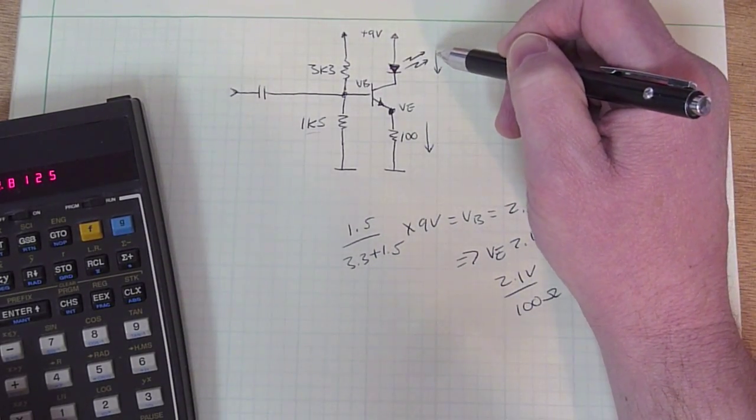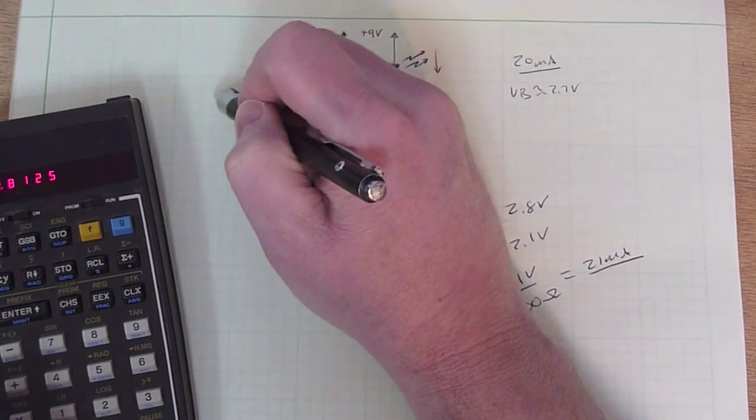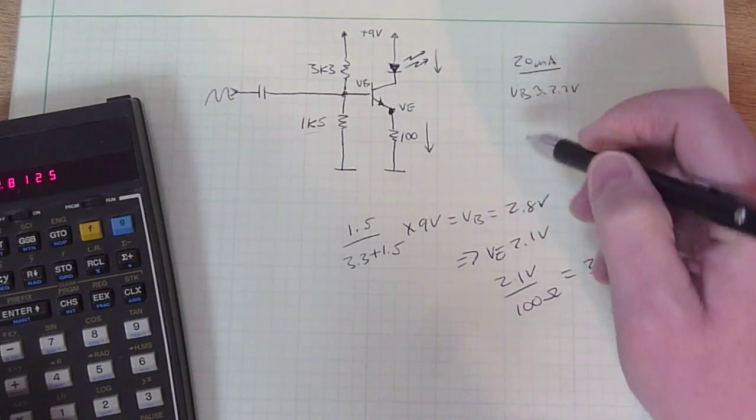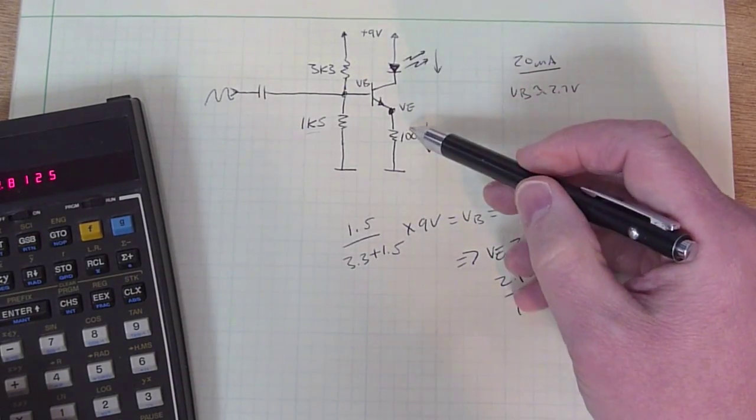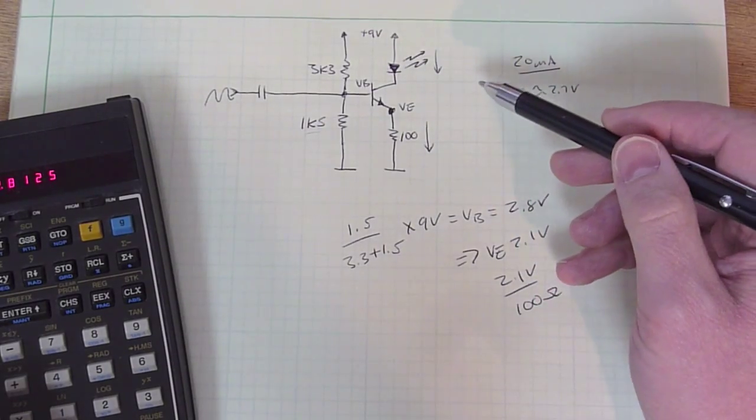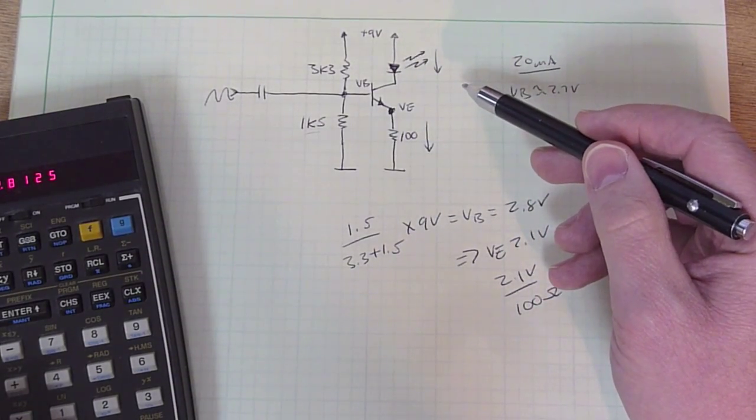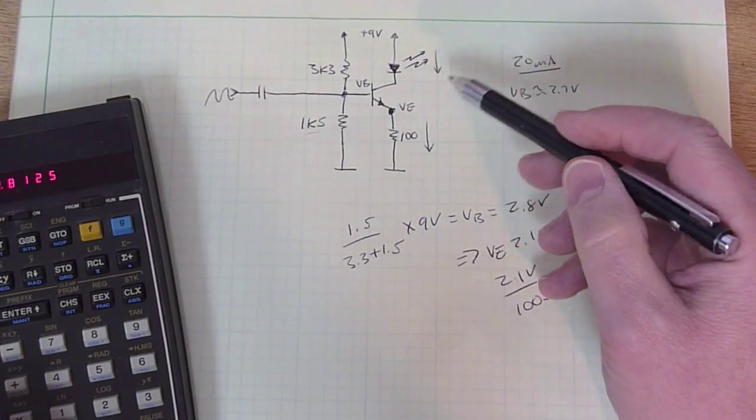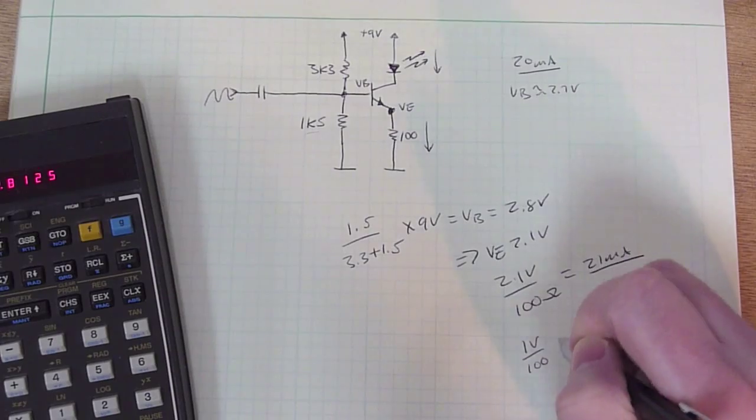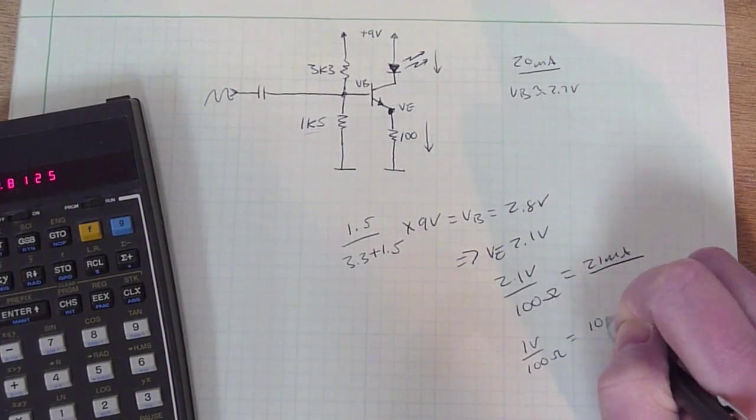So if, for example, the input here, which is AC, has 1 volt peak to peak, that will cause the emitter voltage to go up and down by a volt, and that will cause basically a 10 milliamp variation in our LED current because 1 volt over 100 ohms equals 10 milliamps.